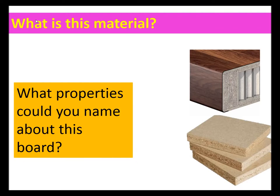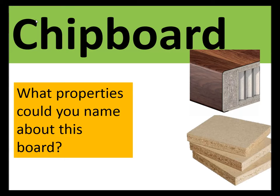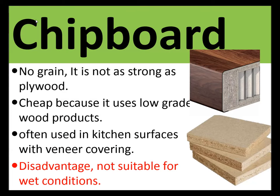We're going to look at three different materials that come up in this exam question. First, chipboard: it doesn't have grain but it's not as strong as plywood. It's cheap because it can use low-grade wood products and is often used in kitchen surfaces and cheap furniture. It can have a veneer coating which improves its appearance, but it's not suitable for wet conditions.